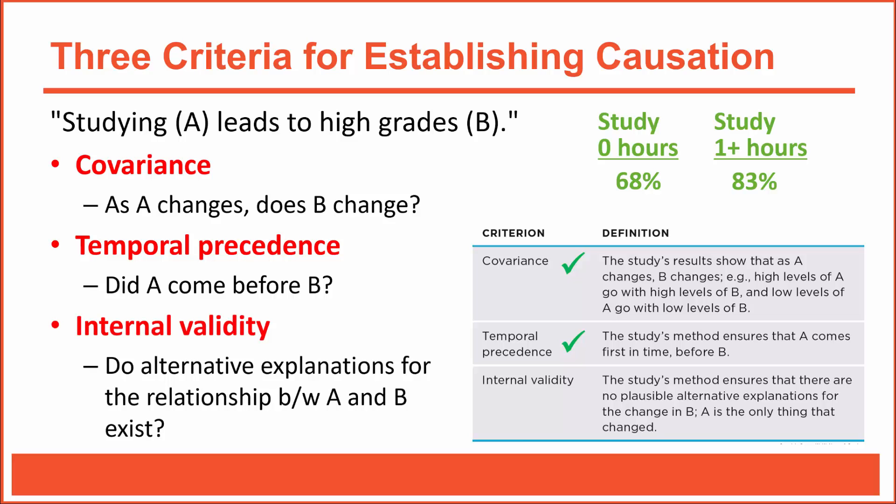The final criterion for establishing causation is internal validity. A research study is internally valid when there's only one plausible explanation for the differences we see — in this case, the difference in grades between those who studied and those who did not. Is study time the only plausible reason for the differences in exam scores? Internal validity is critically important, because if another plausible explanation exists, we won't know which factor was actually responsible for the differences.